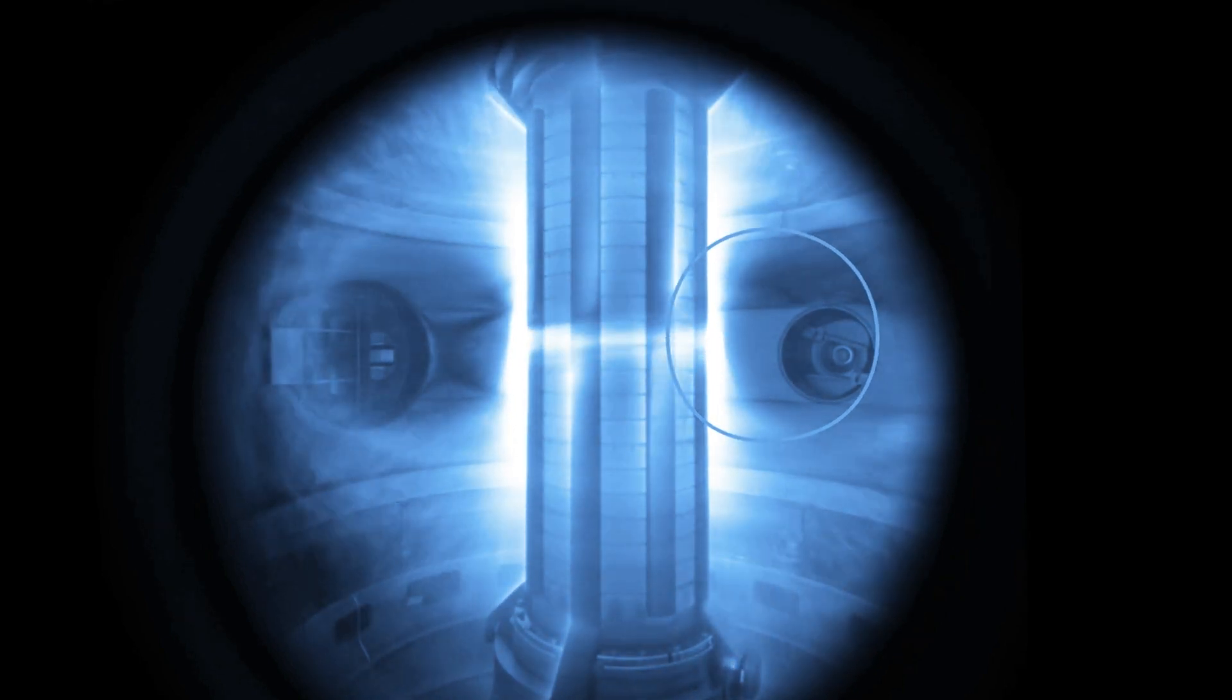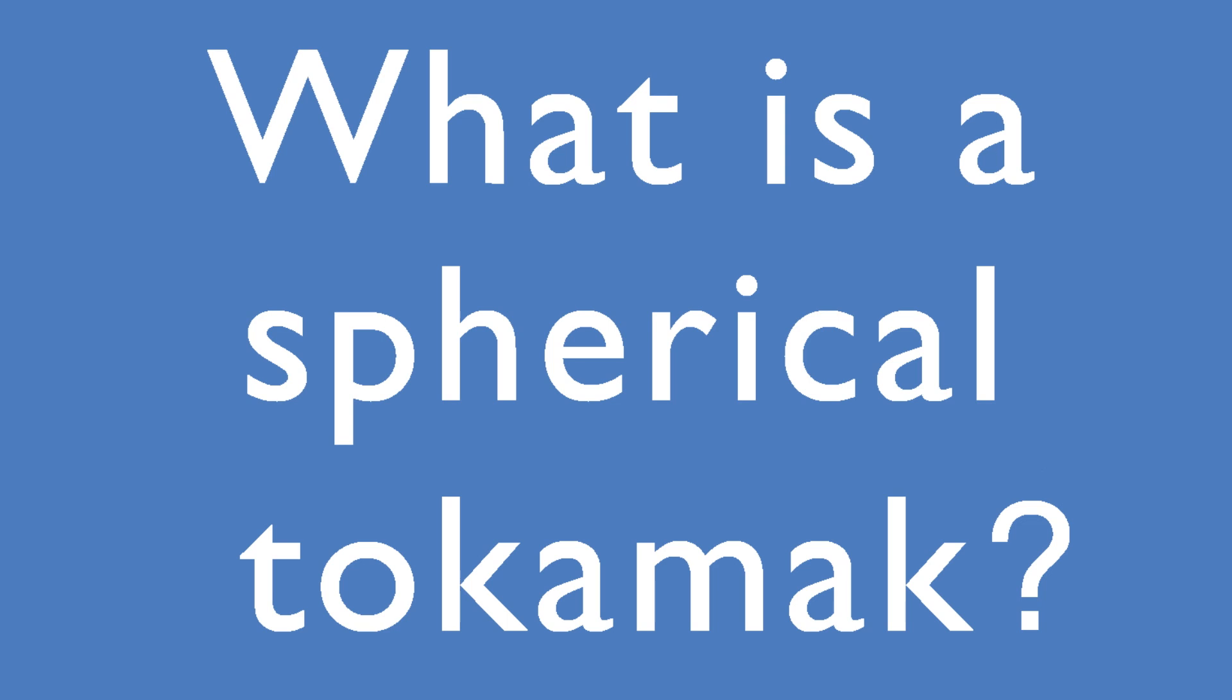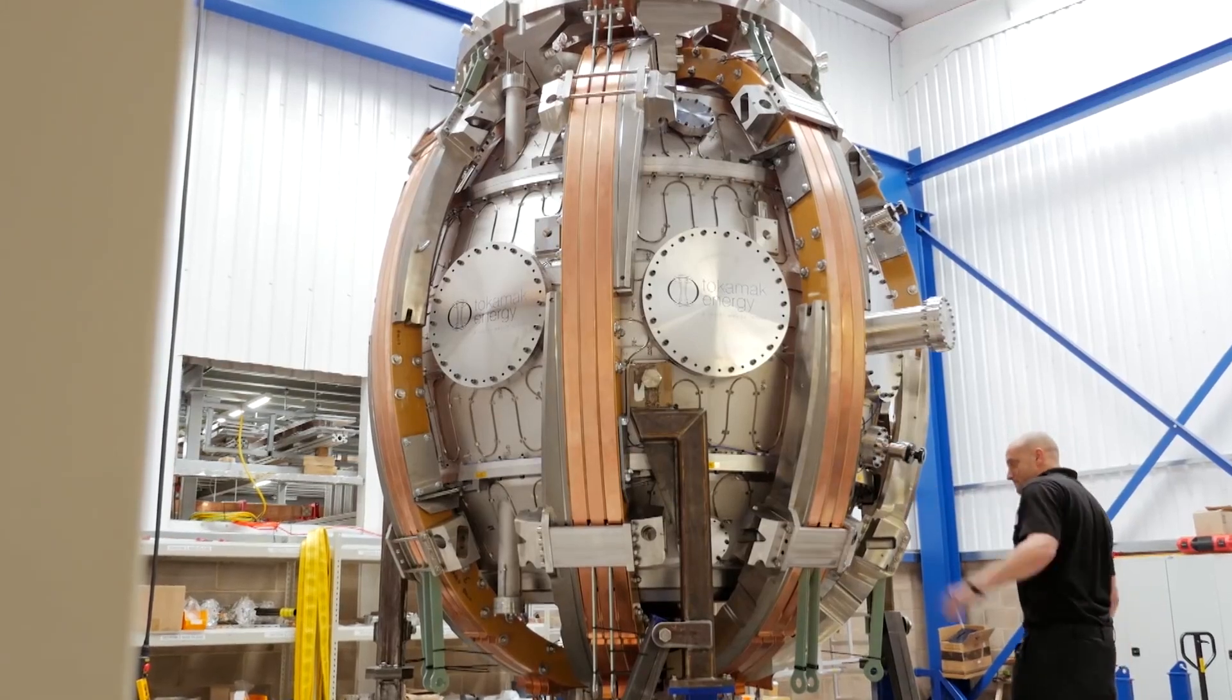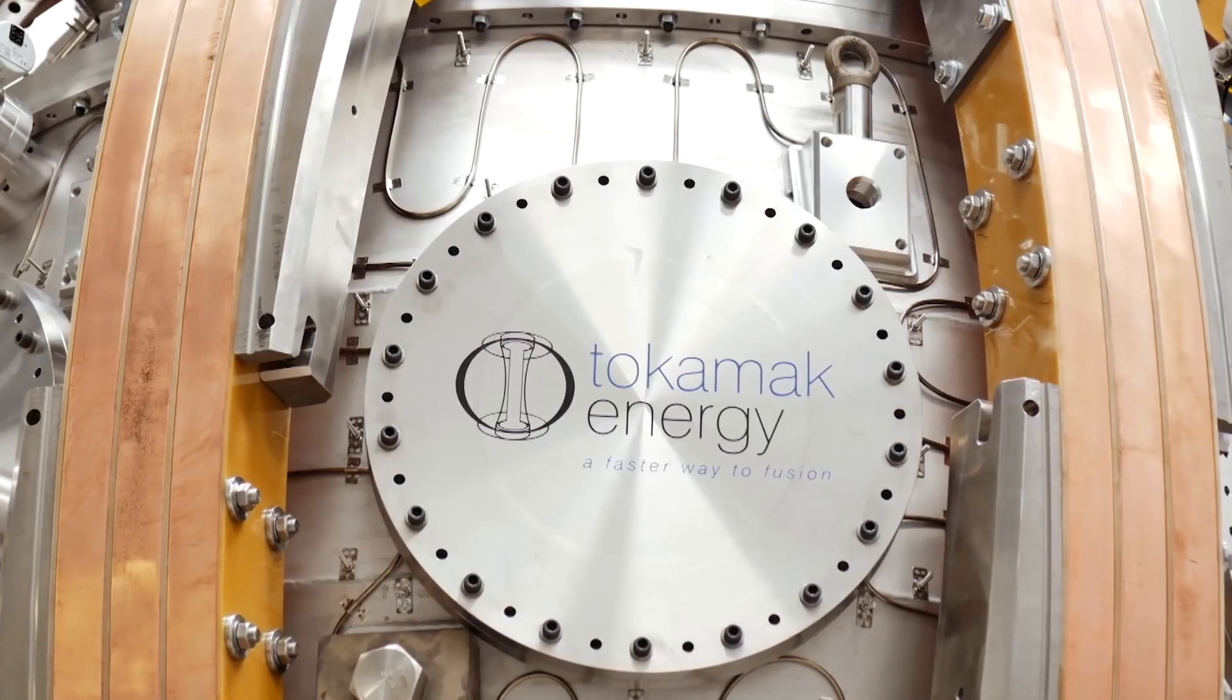A spherical tokamak is based on the same principles as a conventional tokamak, but it is more squashed up. Instead of a ring donut, it looks more like a cored apple.